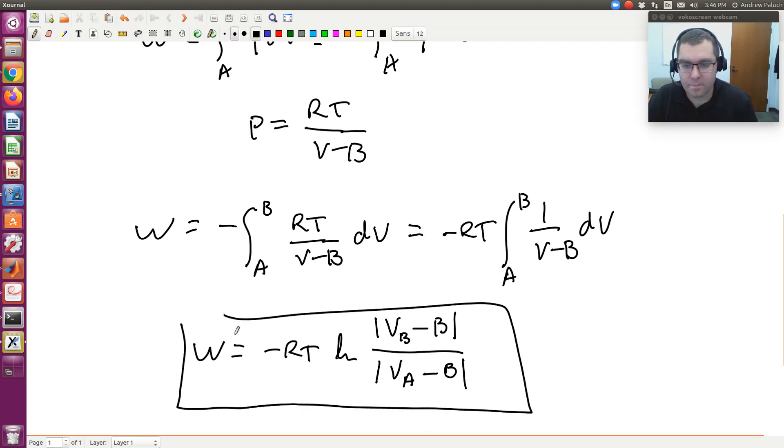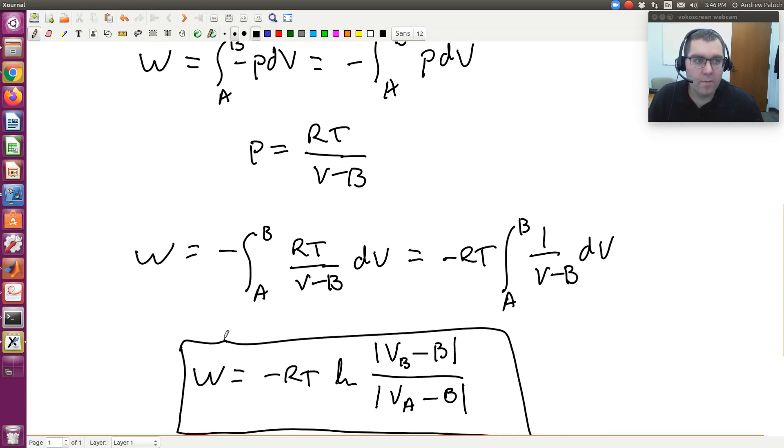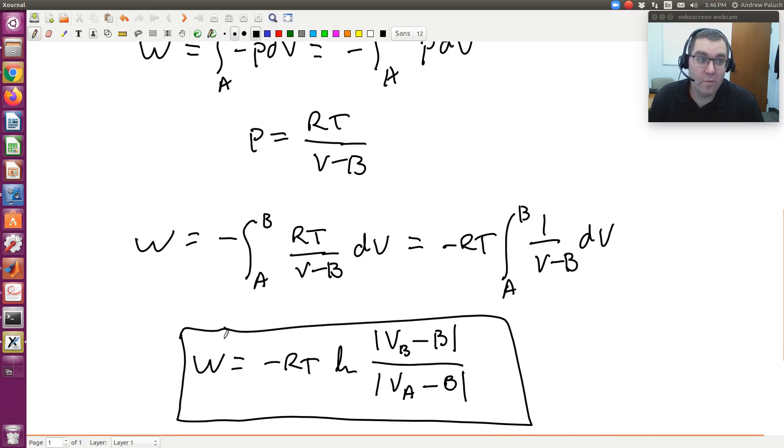That should be it. The isothermal reversible work of expansion for a fluid described by the truncated virial equation is given by this expression. Hope that helps. We'll see you in problem three.